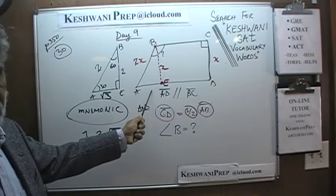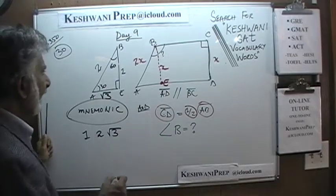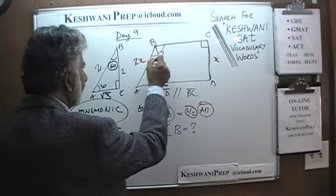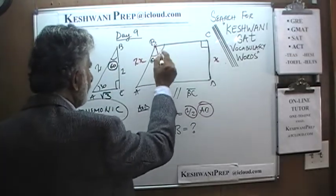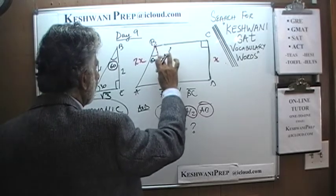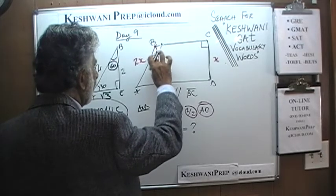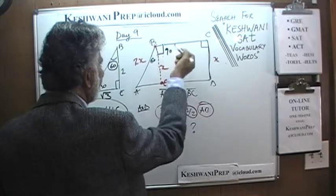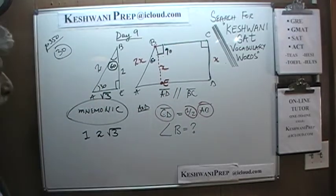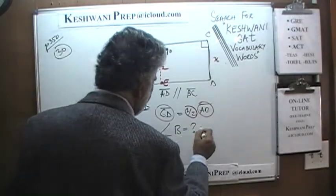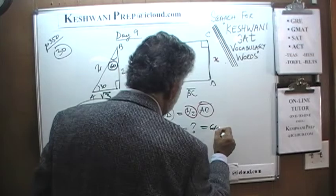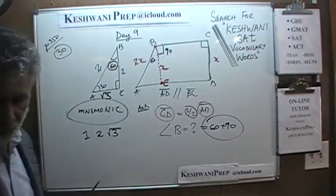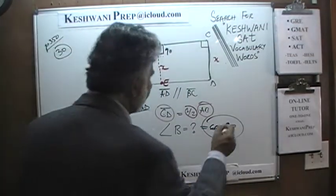We are interested in the fact that we just established this angle is 60, and we know from here to here is 90. So angle B is simply 60 plus 90 — that is 150 degrees. And that's answer A.